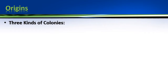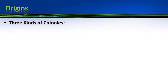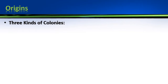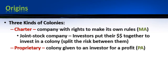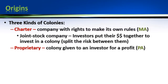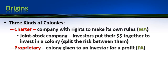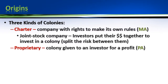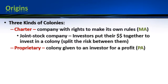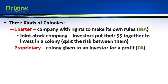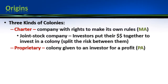So that theme is going to come back again. We're going to see the British government through three different kinds of colonial structures — three different plans. The first kind is a charter colony. Charter refers to the fact that the colony has essentially the right to make its own rules because it's a company — an actual corporation — whose business is to settle in America, make money, and pay the investors who invested in that settlement.